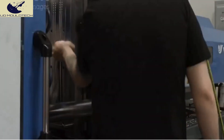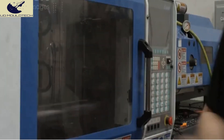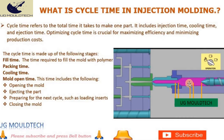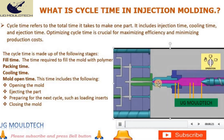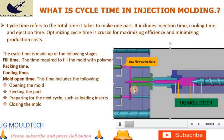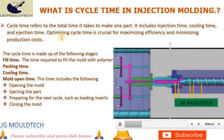Question 7: What is cycle time in injection molding? Cycle time refers to the total time it takes to make one part. It includes injection time, cooling time, and ejection time. Optimizing cycle time is crucial for maximizing efficiency and minimizing production costs.